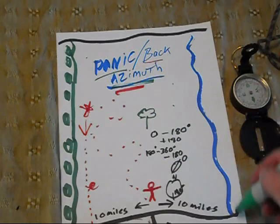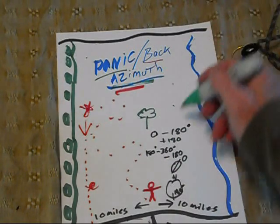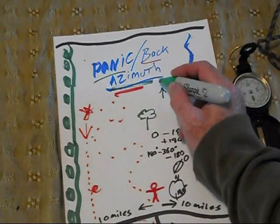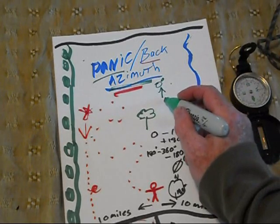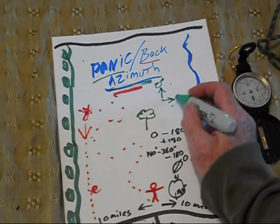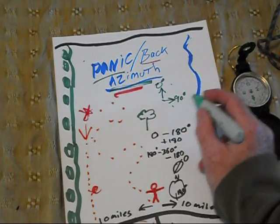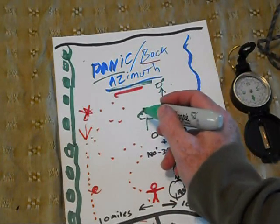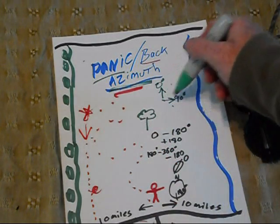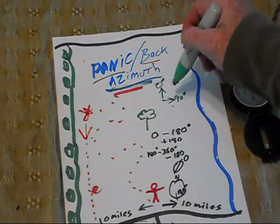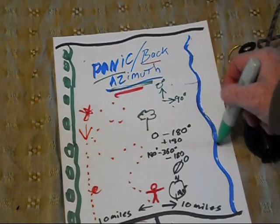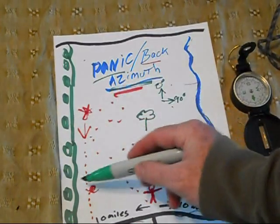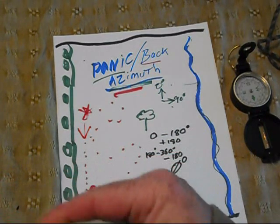We also know that the river runs the whole entire direction to the east. East is 90 degrees — because if north is 0 degrees, a 90-degree turn takes us to the east and we know we'll hit that river. So that could be another panic azimuth: if I get lost, I'll shoot 90 degrees until I hit that river, walk south until I get to my road, and then walk back to my house. You can do the same thing for any area.